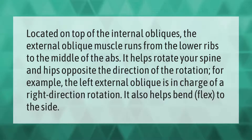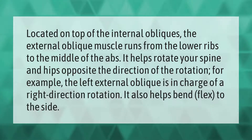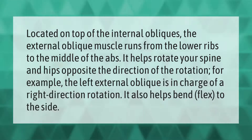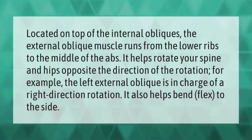Located on top of the internal obliques, the external oblique muscle runs from the lower ribs to the middle of the abs. It helps rotate your spine and hips opposite the direction of the rotation. For example, the left external oblique is in charge of a right direction rotation. It also helps bend and flex to the side.